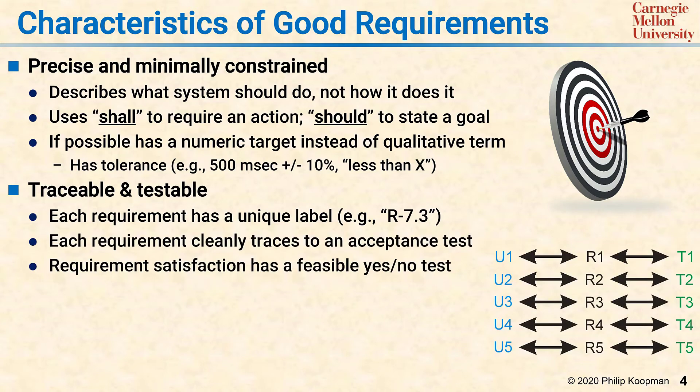In your acceptance test plan, rather than have a complete repeat of the text of the requirement, you can just say this test checks requirement r-7.3, and you know exactly what the test is for. Each requirement should have a feasible yes-no test.